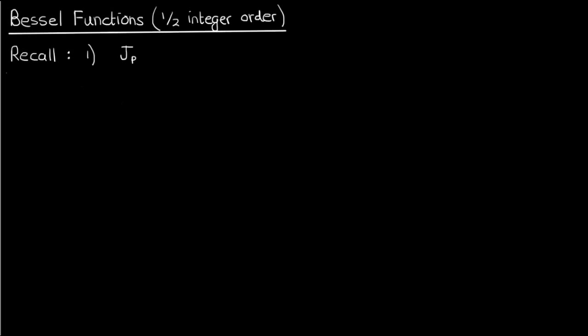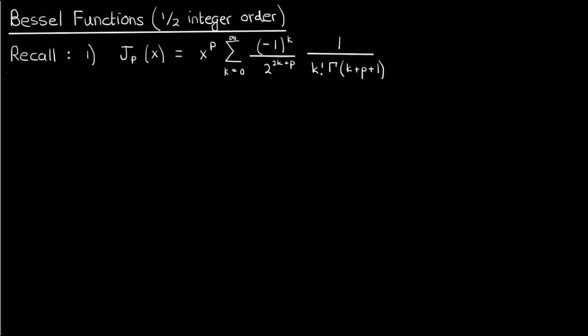The first result I want to review is from the gamma function video, found near the end, where we showed that the Bessel function of the first kind of order p could be written as x to the p times the sum from k equals 0 to infinity of negative 1 to the k divided by 2 to the power 2k plus p times 1 over k factorial gamma of k plus p plus 1 times x to the 2k.